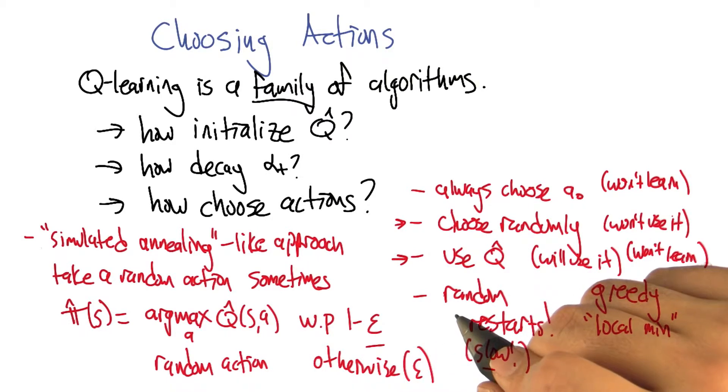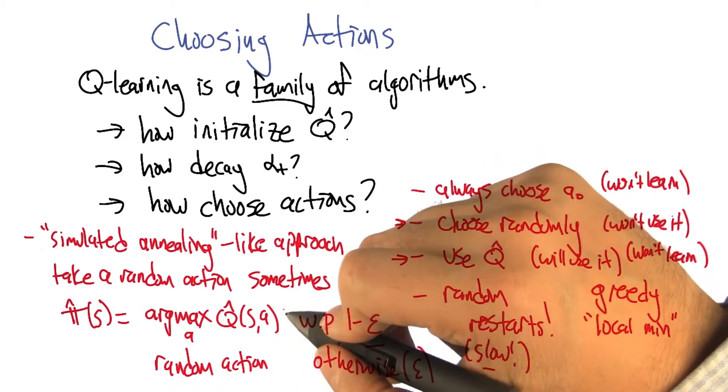So if you do that infinitely long, oh, so this will let you visit SA an infinite number of times. As long as epsilon is greater than zero. That's right, and that the MDP is connected, right?